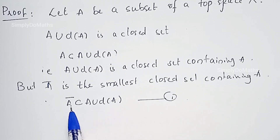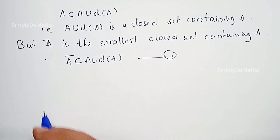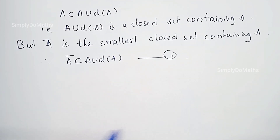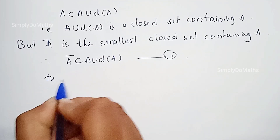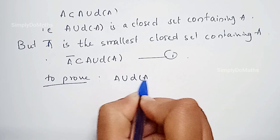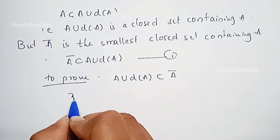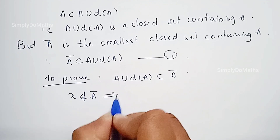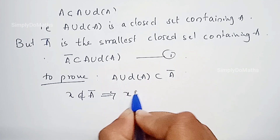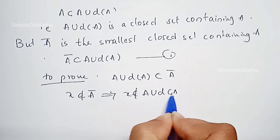Now we need to prove the reverse condition so that we will get A bar equal to A union derived set of A. For this, let's go with the reverse method of proofing. To prove: A union derived set of A is a subset of A bar. For this, we go with the contrapositive method: X does not belong to A bar implies X does not belong to A union derived set of A.